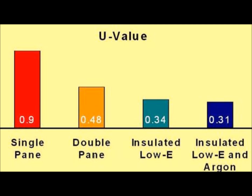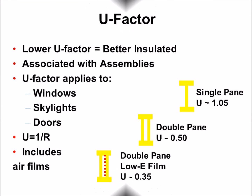So what's the difference between U-Factor and R-Value? While the U-Factor is used to express the insulation value of windows, R-Value is used for insulation in most other parts of the building envelope, such as the walls, floors, and roof. While they are related, different assumptions and test criteria are used in calculating the two values, so they cannot be directly converted.